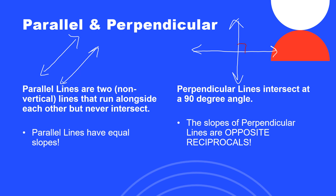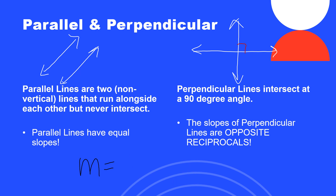The slopes of perpendicular lines are going to be opposite reciprocals. Let's say you have a line with slope two — the opposite reciprocal has the opposite sign (negative, since the original was positive) and the fraction is flipped: two over one becomes one over two, giving negative one-half. Another example: if the original slope is negative two-fifths, the perpendicular slope will be positive five-halves — opposite sign and the fraction flipped.